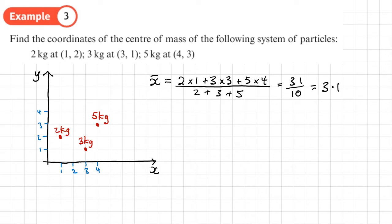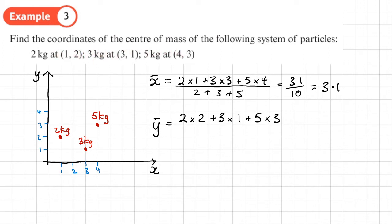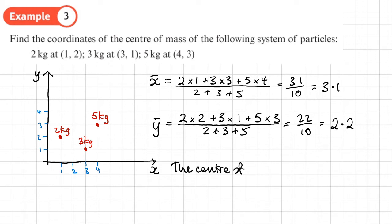Now we do the same in the Y direction for Ȳ. We take each mass times its Y coordinate: (2×2) + (3×1) + (5×3), divided by (2 + 3 + 5). That gives 22 divided by 10, which is 2.2. So the coordinate of the centre of mass is (3.1, 2.2) — that's X̄ comma Ȳ.